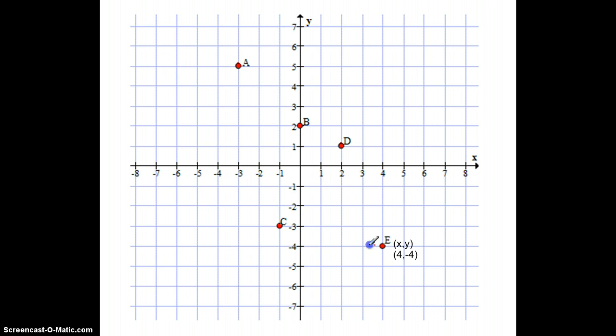We would take E and we would move it to the left, 1, 2, 3, 4, 5 to the left. And then to get up to point C, we would have to move it up 1.